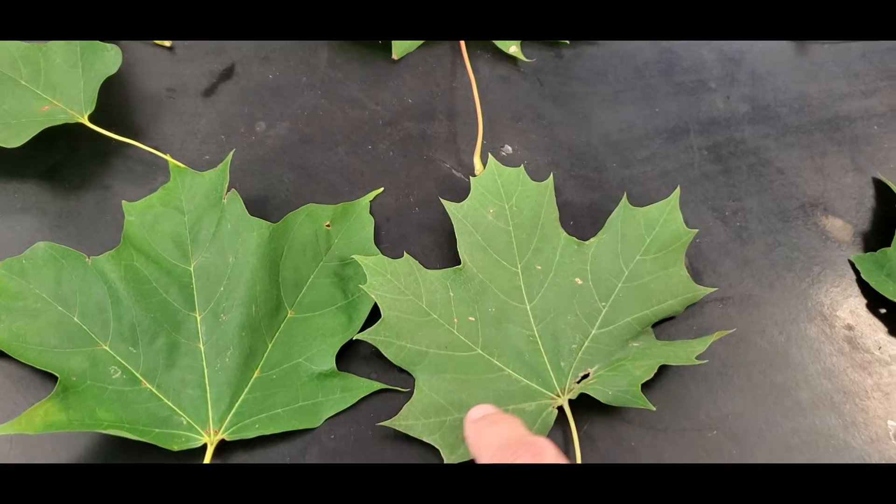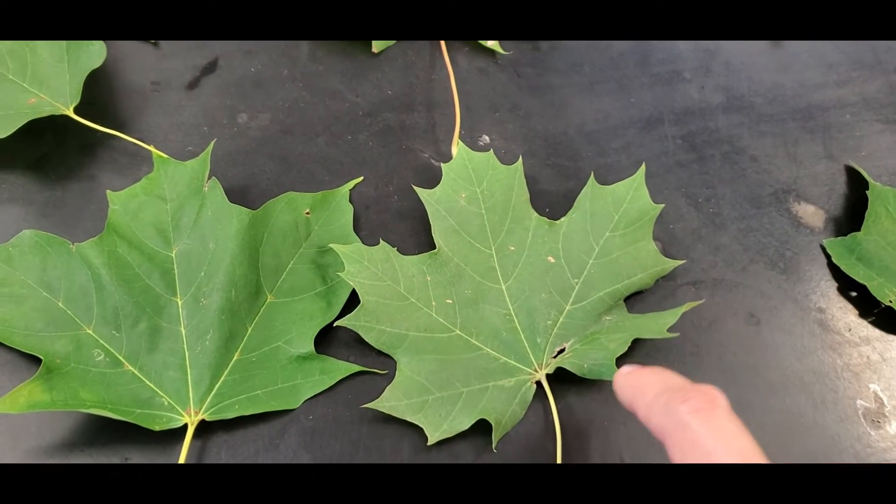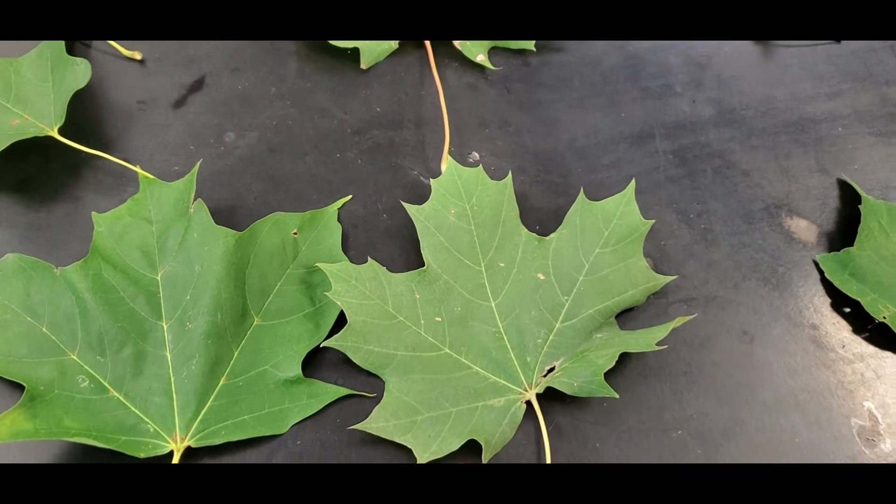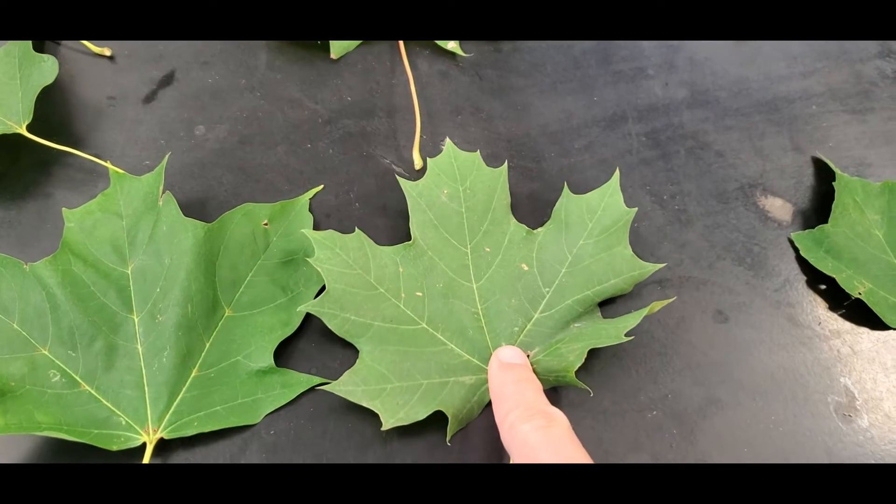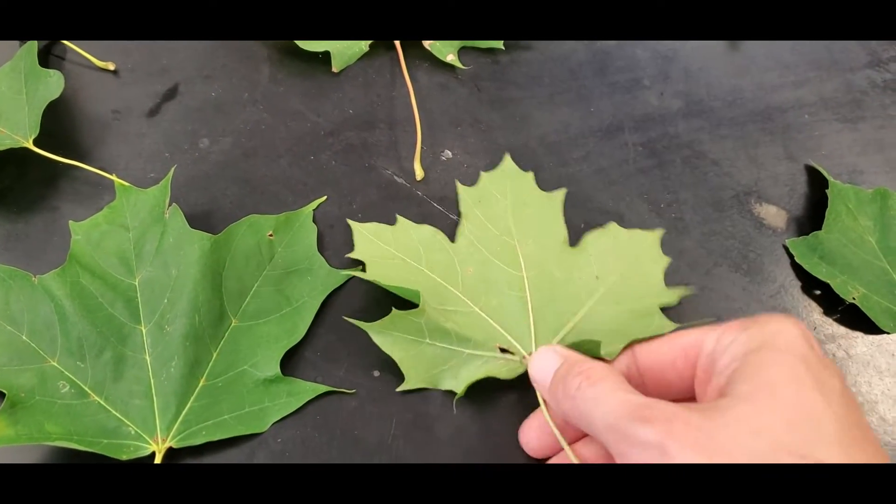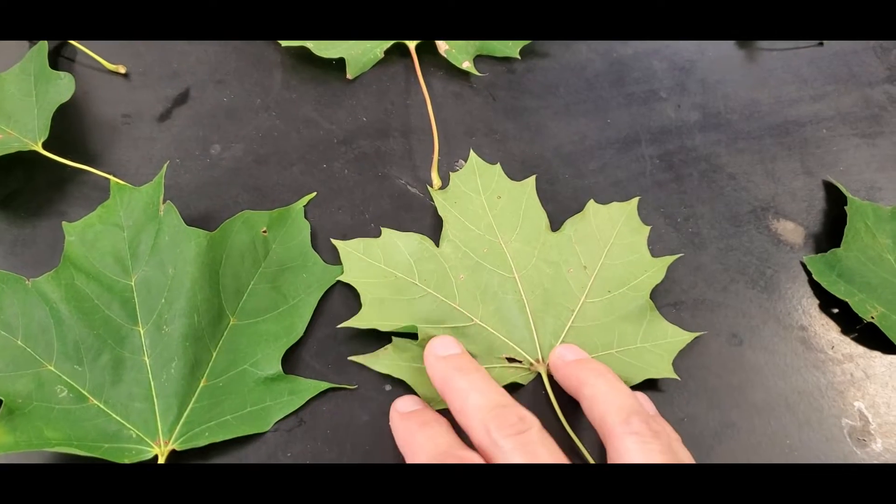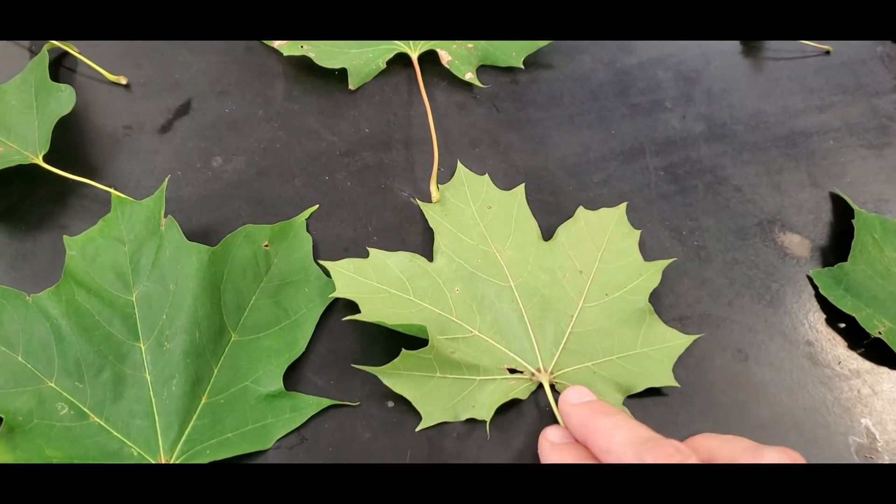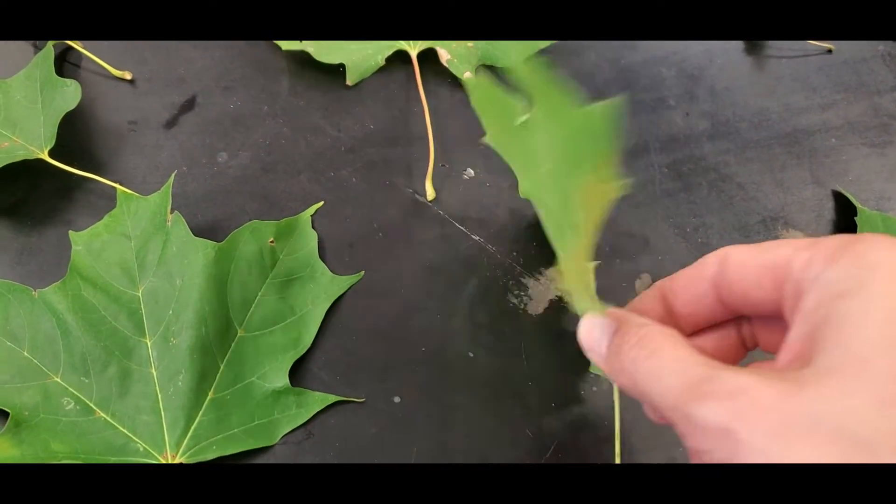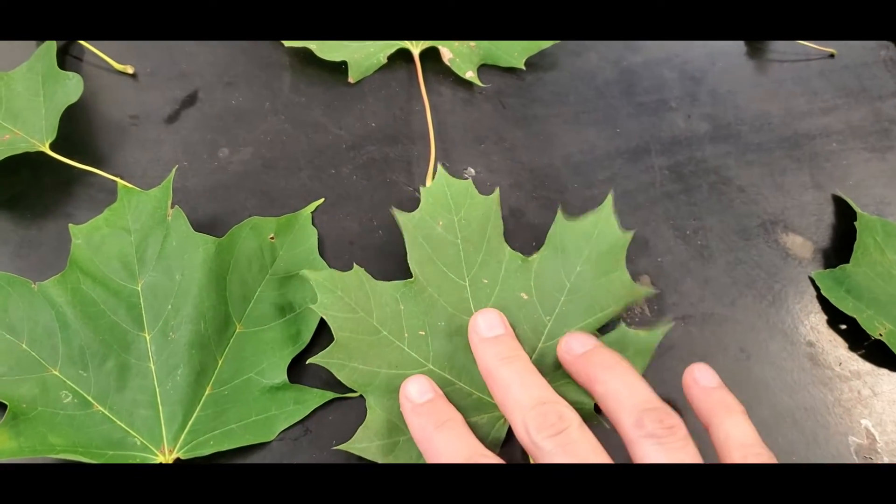So you've got the one, two, three lobes, but then you've got four, five, and then you've got these two points on the bottom. The scientific name is Acer platinoides. Platanus is sycamore or plane tree. And they have a leaf that looks a lot like this. So it looks more like a plane tree leaf.